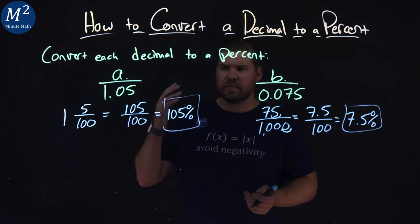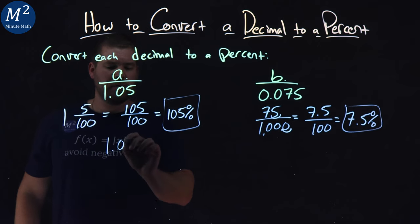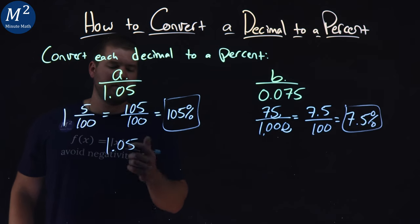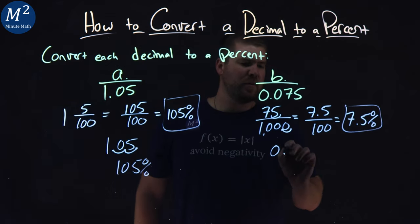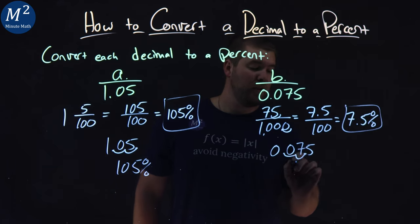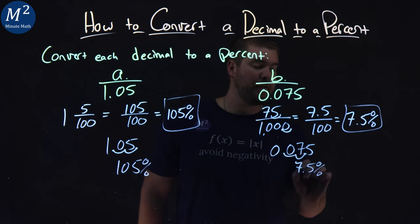Now what's the quick way to do this? We take 1.05, take the decimal place, and just move it to the right two spots. 1, 2. 105 percent. Pretty easy. Next one, 0.075. Move it two spots to the right. 1, 2. And we have 7.5 percent.